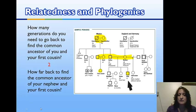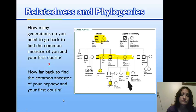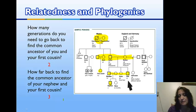How far back would your nephew have to go to find a common ancestor between him and your first cousin? That's three generations: one, two, three. The same grandparents are the common ancestor between your nephew and your first cousin as between you and your first cousin — you just have to go back one additional generation.